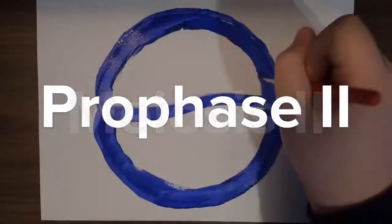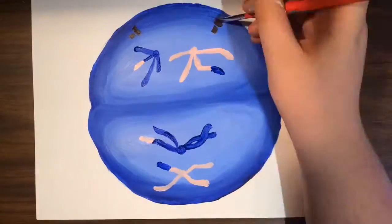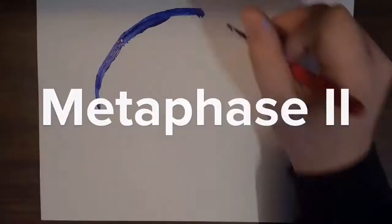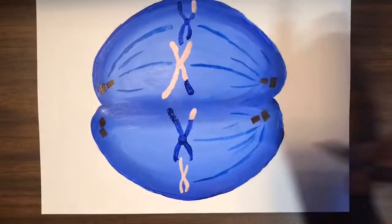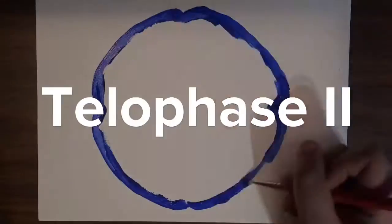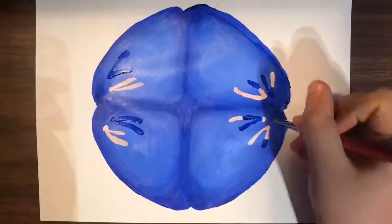Both cells from Meiosis I will go through the phases of Meiosis II, and the end result will be four cells with 23 single chromosomes.